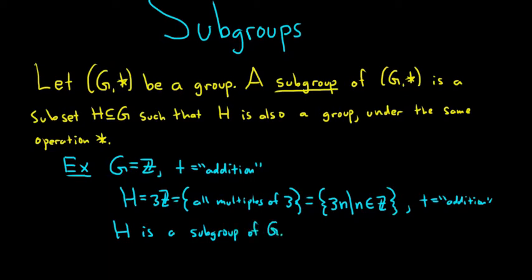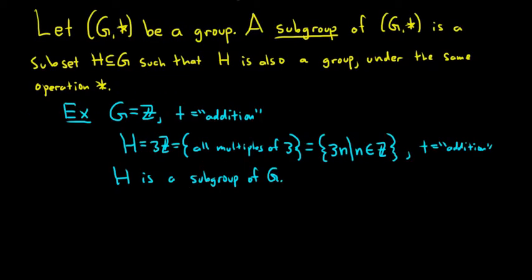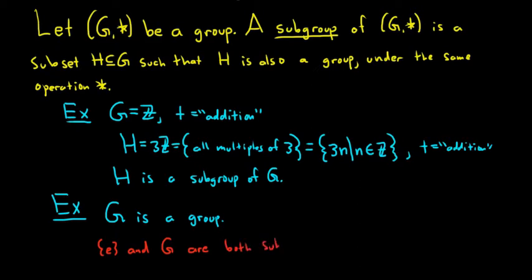Here is another example. Say you have a group G, so G is a group, and something nice happens. It turns out that the set containing E and the group G itself are both subgroups of G. So E and G are always subgroups of G.